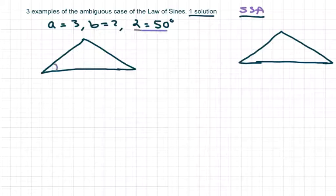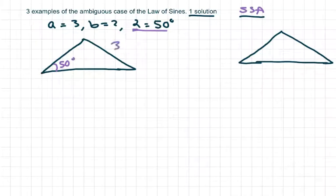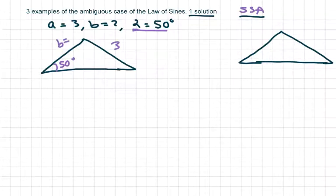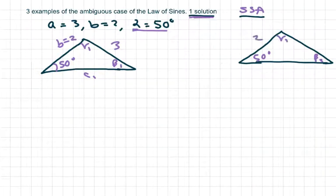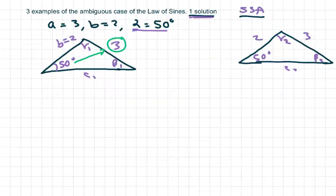I always start with this angle here — it doesn't matter if it's alpha, beta, whatever. It's going to be 50 degrees, then 3. The side across from alpha is little a, and I'm going to put my b here, and my b is 2. So this would be beta and this would be my gamma, and I have to find c. So I have 50, and this would be my beta 2. We already know it's going to be one solution, but I want to show you a different method. So this is 2. When the side across from the angle given is bigger than the other side that's given, then there's going to be one solution — the side a is greater than b.